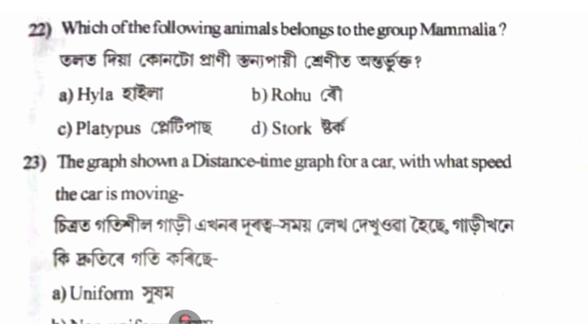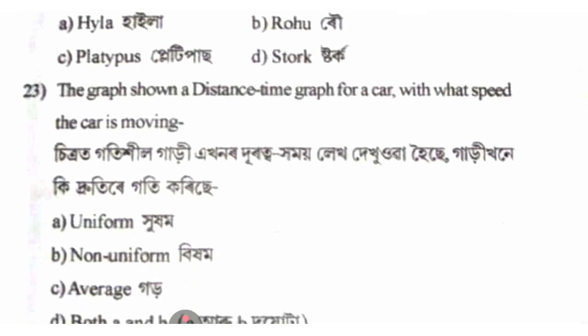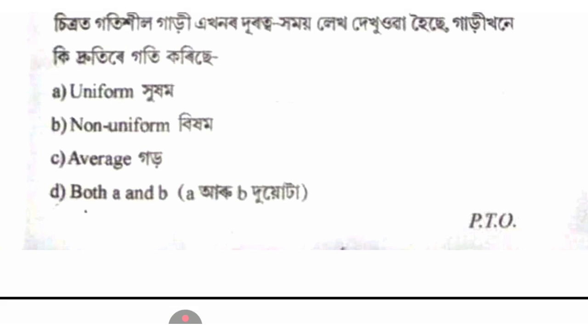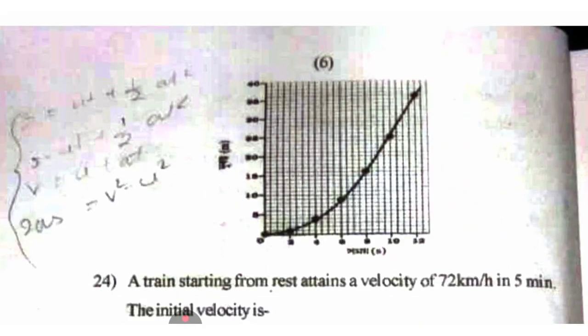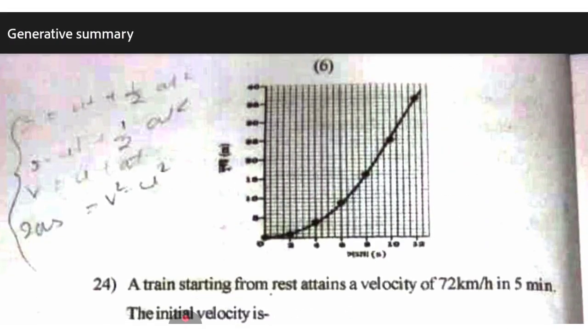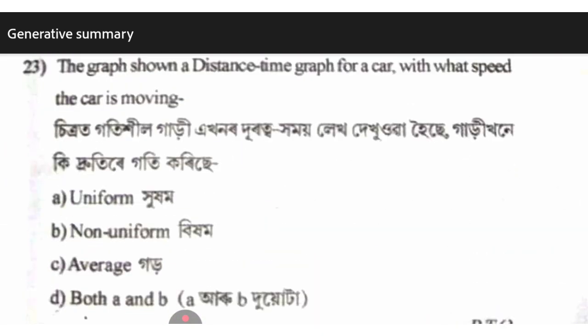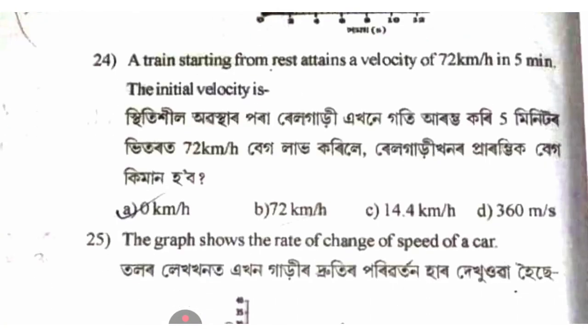The distance-time graph for a car — what speed is the car moving at? From the graph, the car shows non-uniform speed, option B.